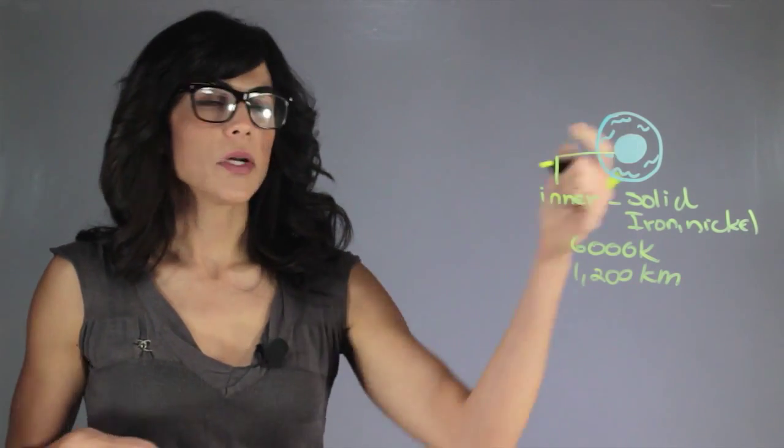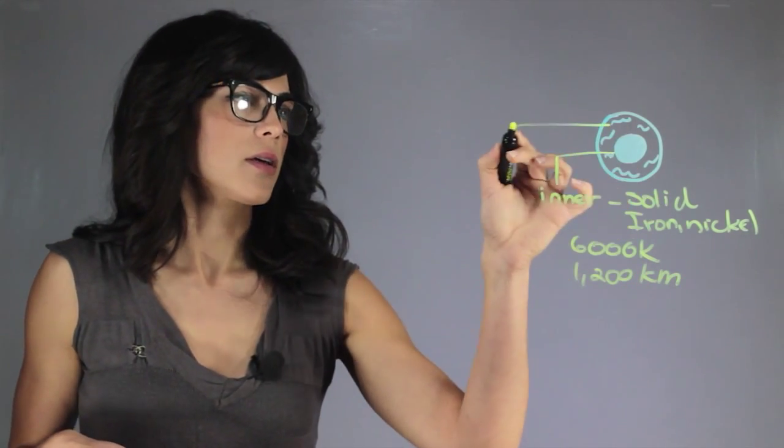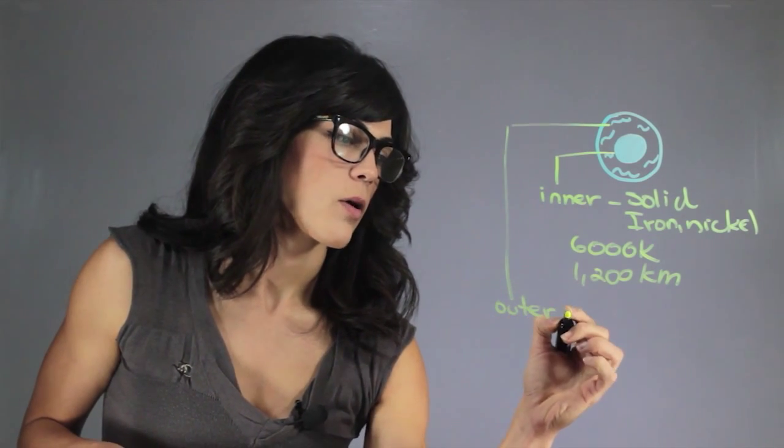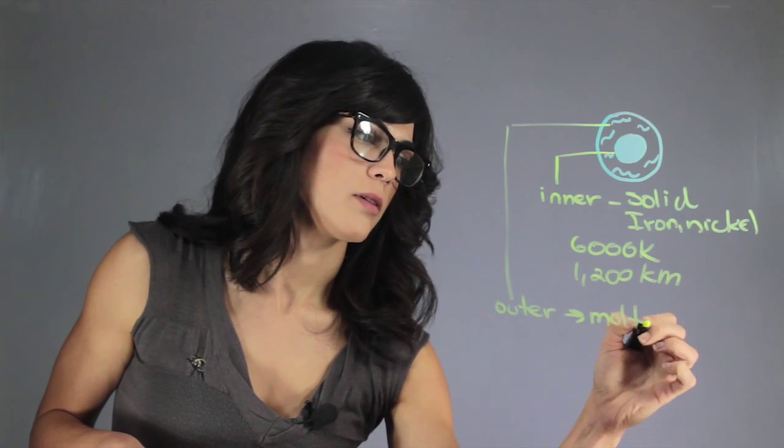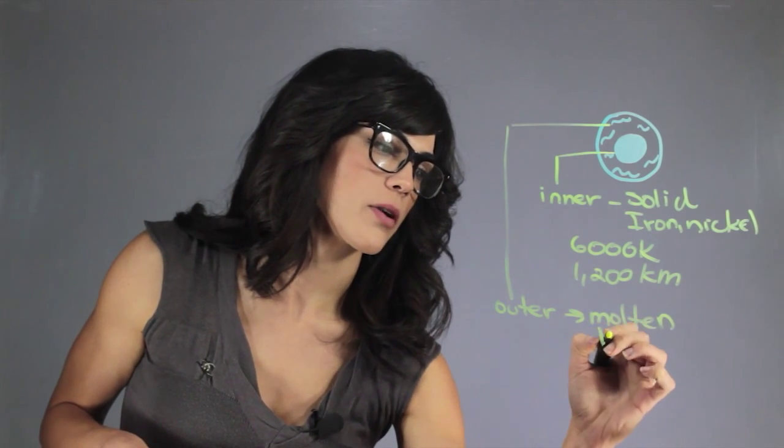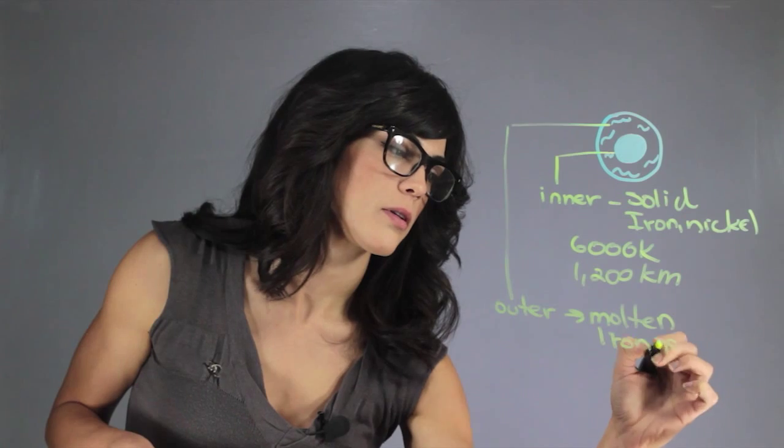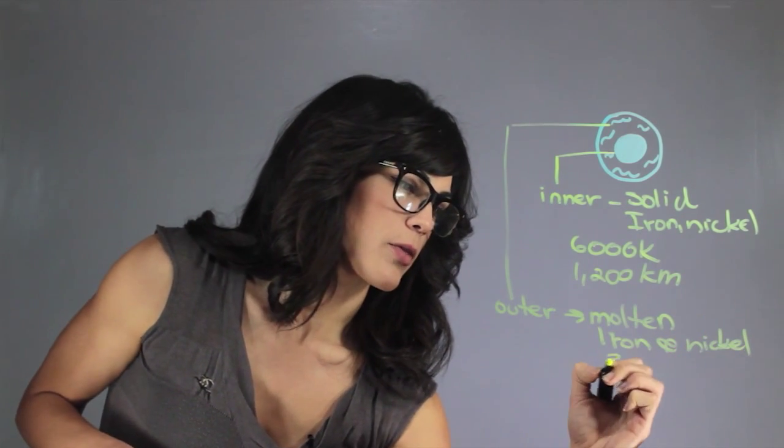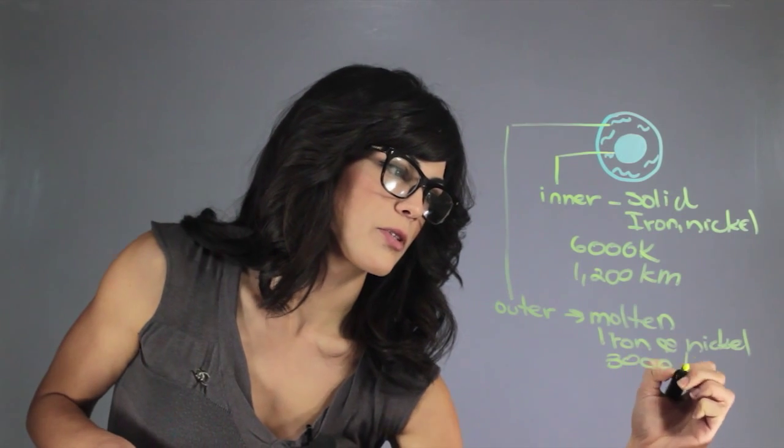Now what's going on in the outer core? For the outer core we actually have a molten fluid of iron and nickel and it's about 3,000 kilometers thick.